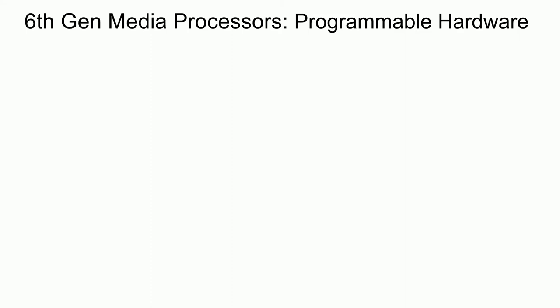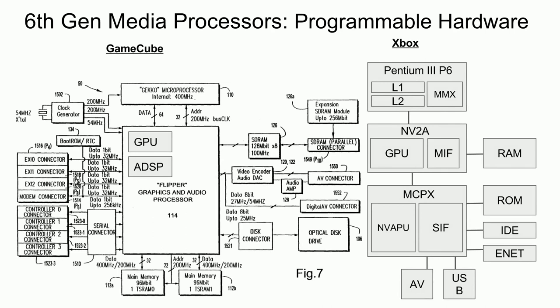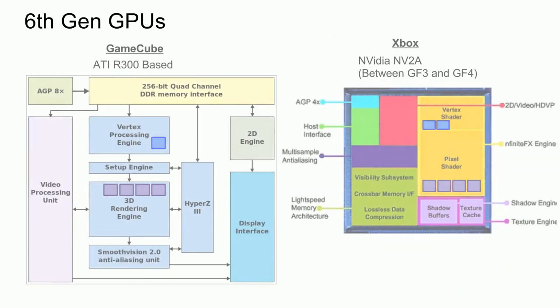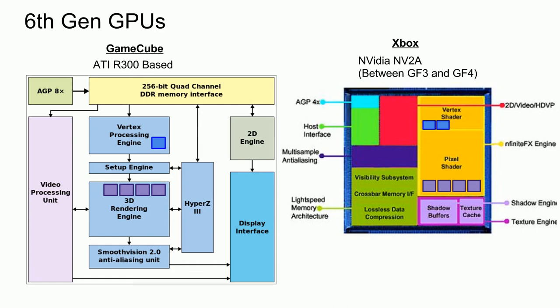Finally, we have the 6th generation consoles: the Nintendo GameCube and the Microsoft Xbox, both released in 2001. The information available on these two consoles is very limited, most likely due to strict NDAs that both companies had. Both consoles had dedicated GPUs in their Northbridges, and both have a DSP-based audio processor, with the Xbox having the audio processor in the Southbridge. Both support CD sound samples and allowed for up to 64 simultaneous channels. More interesting is the more modern GPUs used — the GameCube GPU is based on the ATI R300 series, and the Xbox GPU is an NVIDIA NV2A, somewhere between the GeForce 3 and GeForce 4 series. The block diagram for the NV2A is that of the GeForce 3. The blue squares represent vertex shader cores, with the GameCube having one and the Xbox having two. The pixel shaders are shown via purple squares, where each GPU has four.